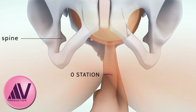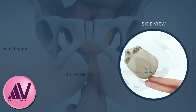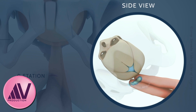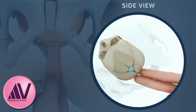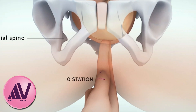The index finger then moves along the fetal skull in the midline, which may be up or down, to find the lowest bony point. A second mark is placed on the index finger at the introitus, and in doing so, one can compare the two marks to objectively measure the actual fetal station.